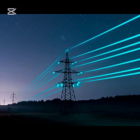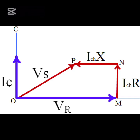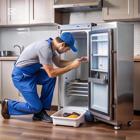The Ferranti effect occurs when the current drawn by the line's capacitance is greater than the load current at the receiving end, especially during light or no load conditions. The large charging current of the capacitor causes a voltage drop across the line inductor which is in phase with the sending end voltage. This voltage drop increases along the line, making the receiving end voltage higher than the sending end voltage — this is known as the Ferranti effect. The second cause is the connected load at the receiving end.